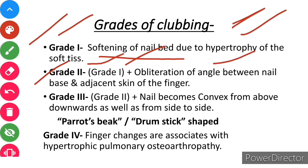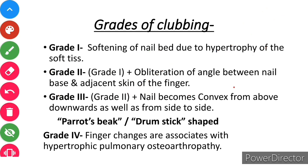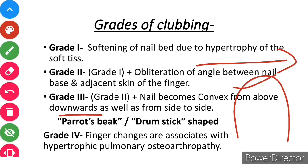Grade two is obliteration of the angle between the nail base and adjacent skin of the finger — obliteration of both angles. Then grade three is combined with grade two symptoms, and additionally the nail becomes convex from above downward as well as from side to side — convexity is visible in both planes.